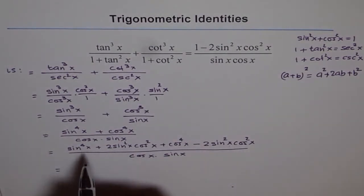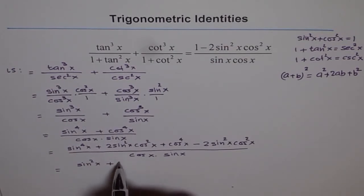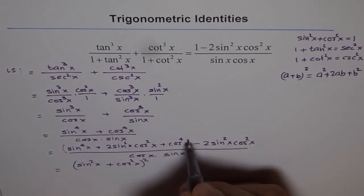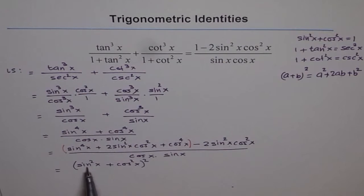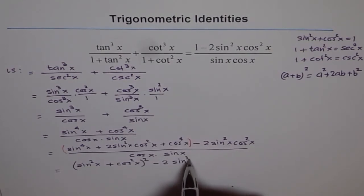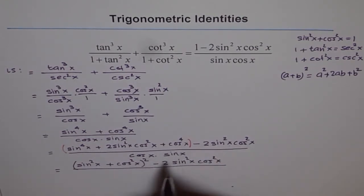Combining the first three terms gives a perfect square: (sin²x + cos²x)², since sin²x squared is sin⁴x, cos²x squared is cos⁴x, and 2·sin²x·cos²x is the middle term. So the numerator becomes (sin²x + cos²x)² minus 2sin²x cos²x, divided by sin x cos x.